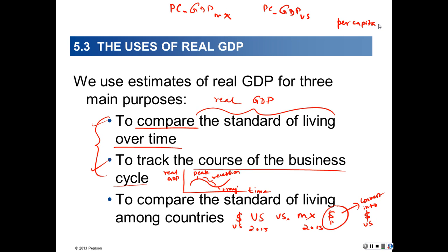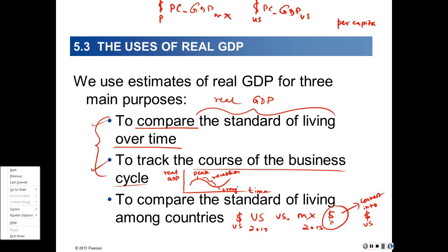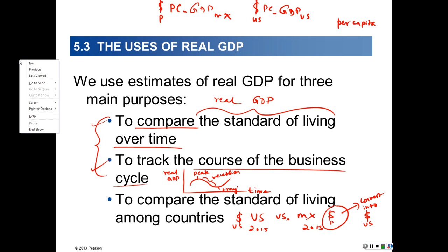The first two bullet items involve comparisons across time. The last one is about comparing GDP between countries in order to figure out whether the Japanese are better off than the Americans, say. The third point is about making international comparisons of standards of living. Again, we use real GDP — we compare real GDP in the US to real GDP in, say, Mexico.